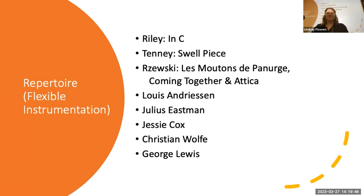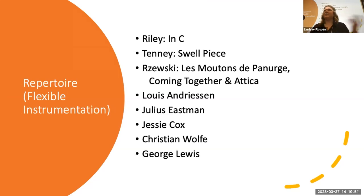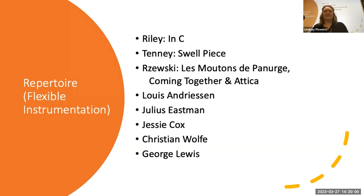In our classroom, this is some repertoire that composers have written where we could have flexible instrumentation. Maybe there will be a chamber group in my class, but maybe I have a violinist and a percussionist and an oboist — so what are we going to do when we play together? These are just some ideas with that.